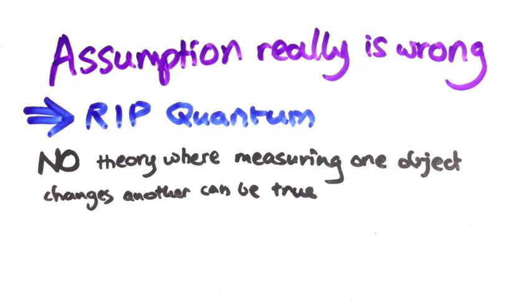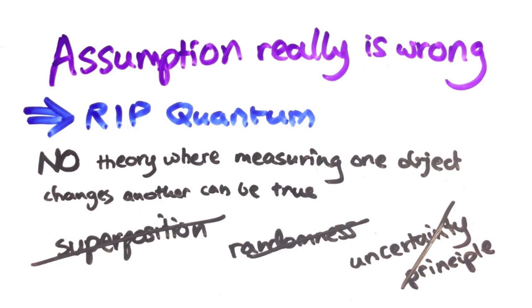We must do it the way classical mechanics did, i.e. none of the quantum weirdness, no superposition, no randomness, no uncertainty principle. So these are the two possibilities.